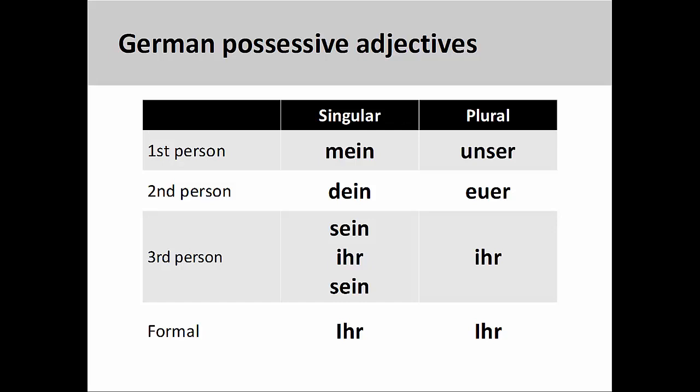Mein — first person singular. Dein — second person singular. Sein — masculine third person singular. Ihr — feminine third person singular. Sein — neuter third person singular. Unser — first person plural. Euer — second person plural. Ihr — third person plural. The formal possessive adjective, both singular and plural, is Ihr, which has a capitalized first letter.